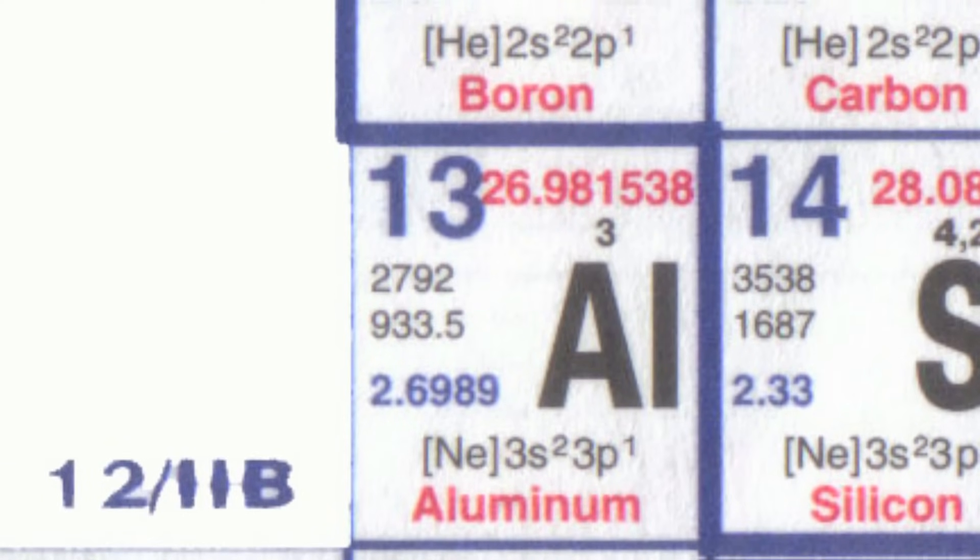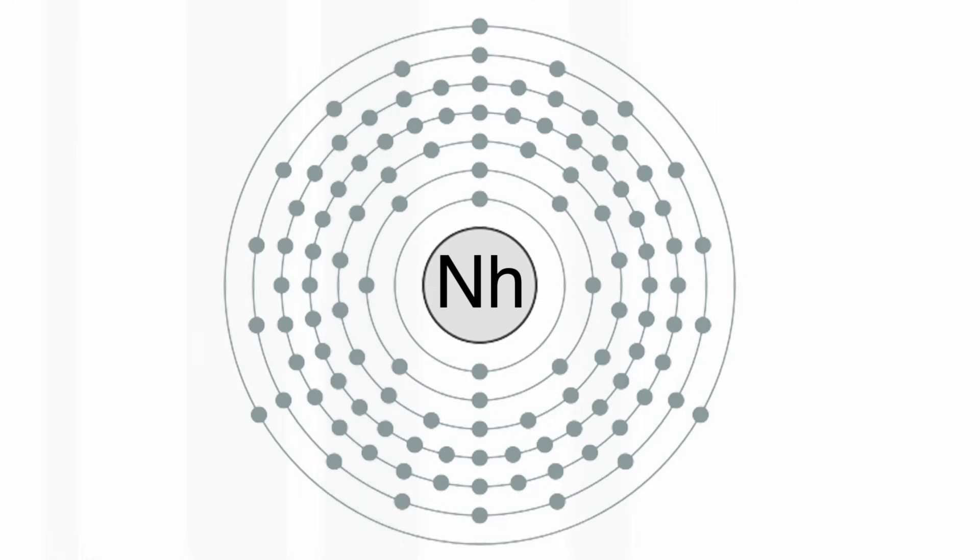Nihonium is in the same group, so it has three outer electrons in just the same way as thallium, assuming the electrons are arranged in the same configuration. When you get to these large atoms, their energy levels of the different shells are very close together, so it would be possible for the configuration to be different.